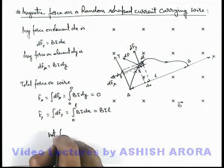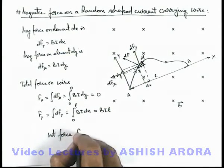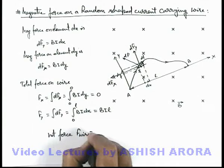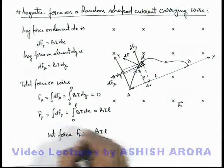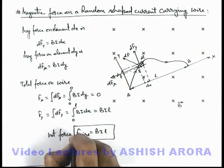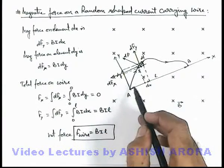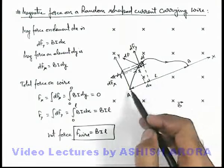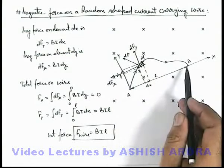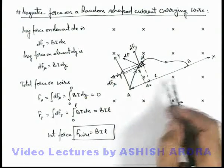We can write net force on wire as F wire equals BiL. This is the same force which would be acting on the wire if this curved wire is replaced by a straight wire of length which is equal to the line joining the two endpoints of the wire.